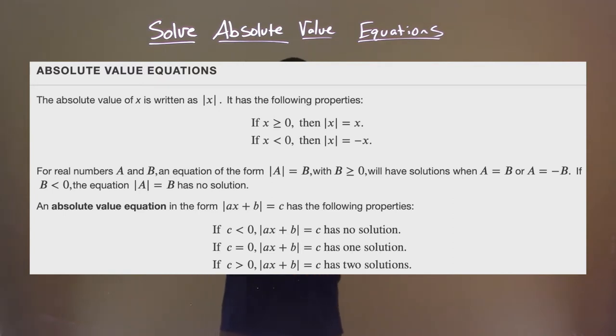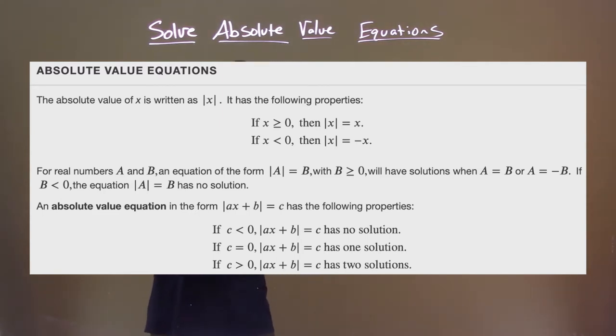the equation absolute value of A equals B has no solution. An absolute value equation in the form absolute value of ax plus b equals c has the following properties. If c is less than zero, absolute value of ax plus b equals c has no solution.